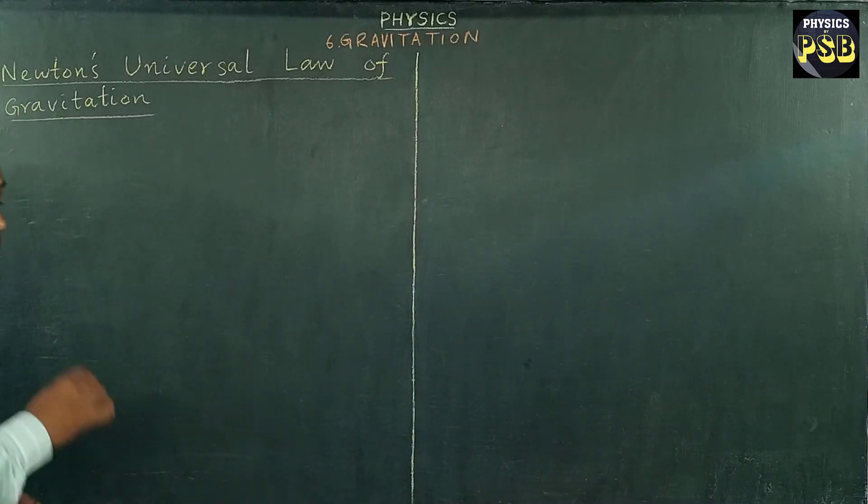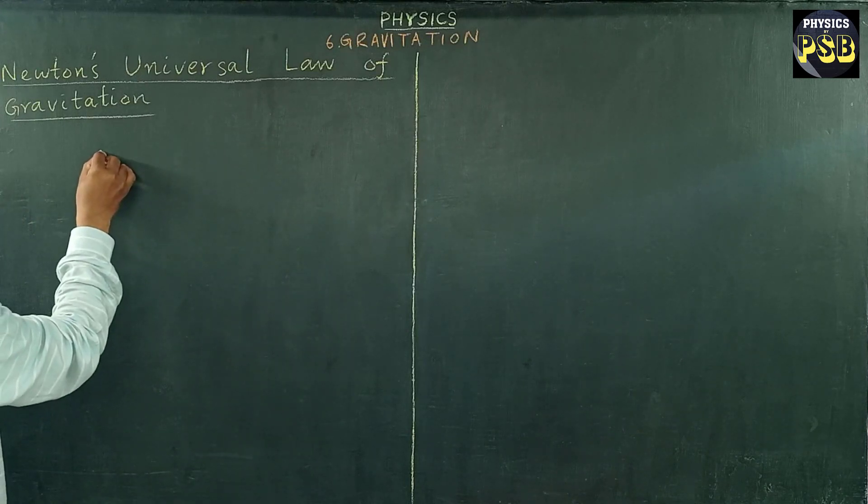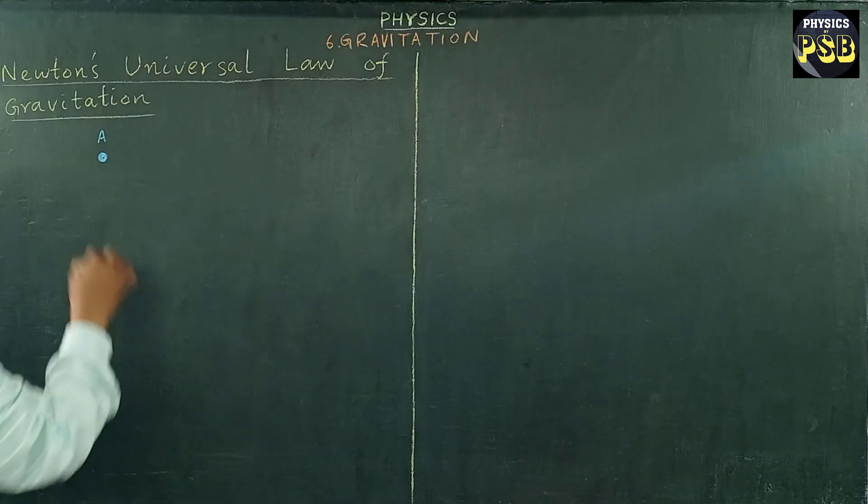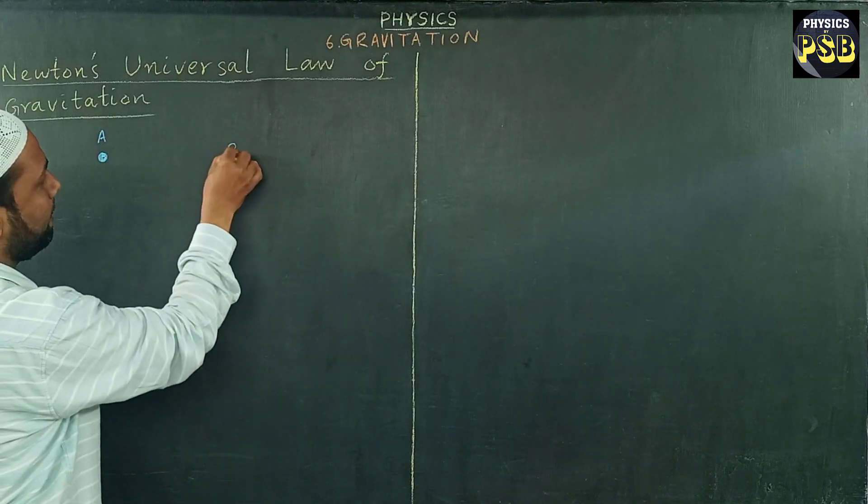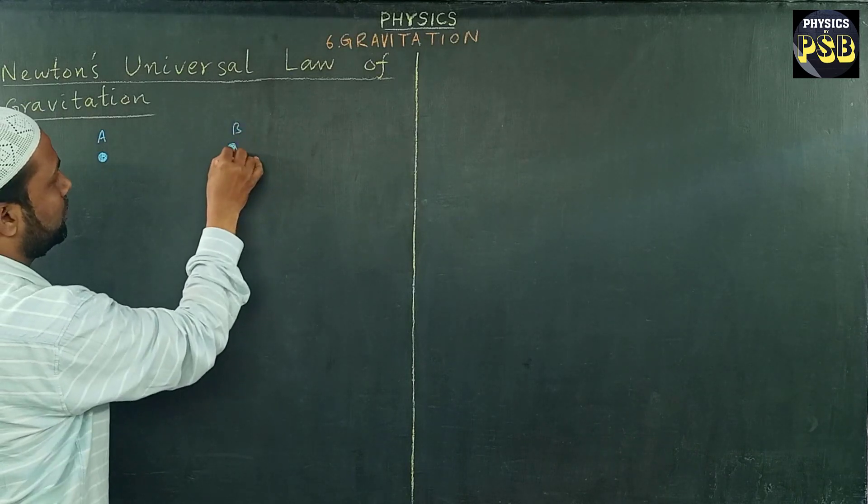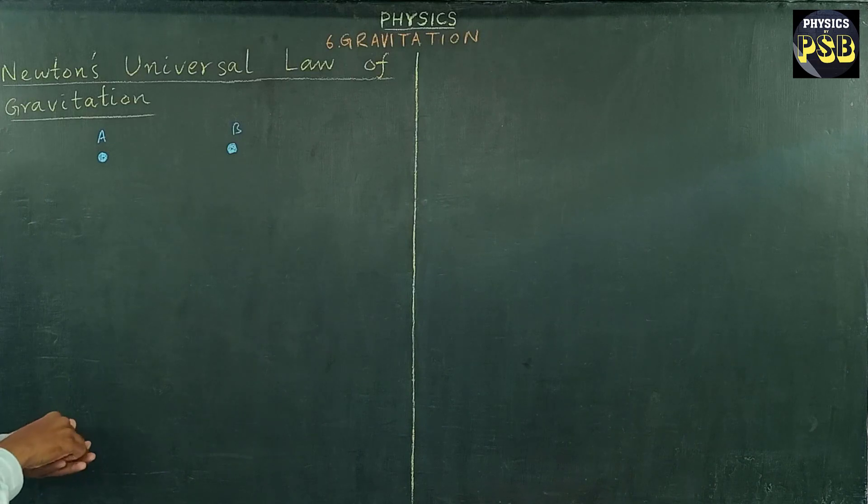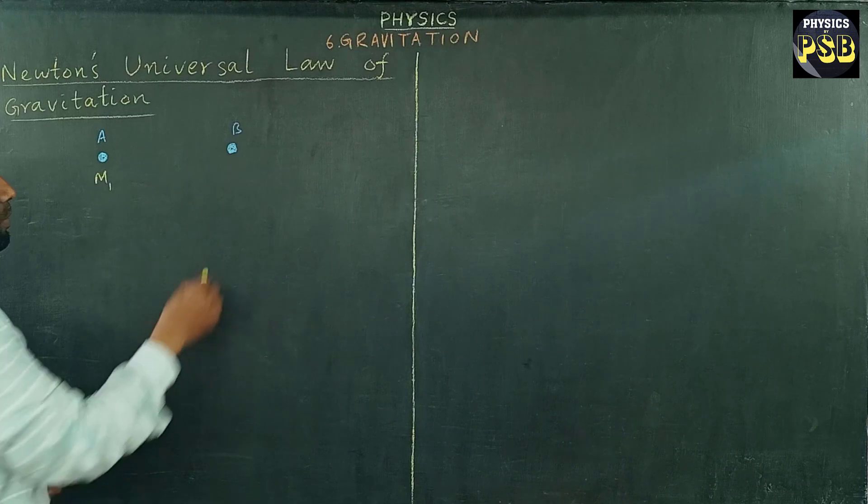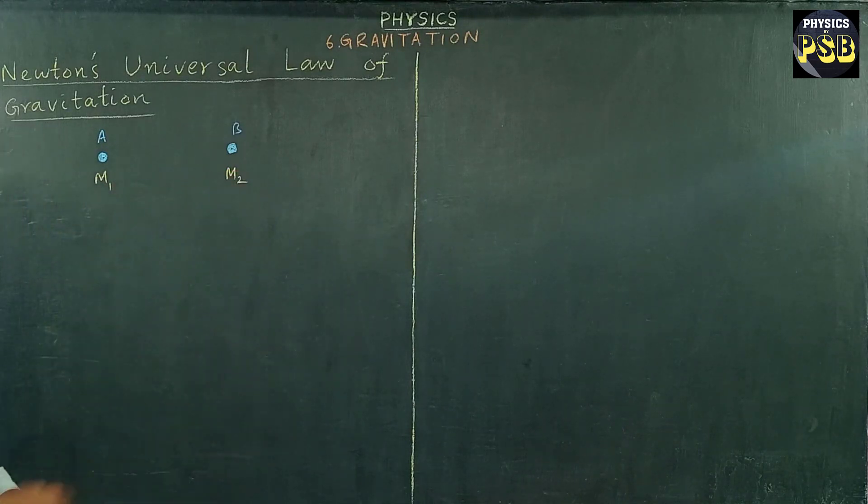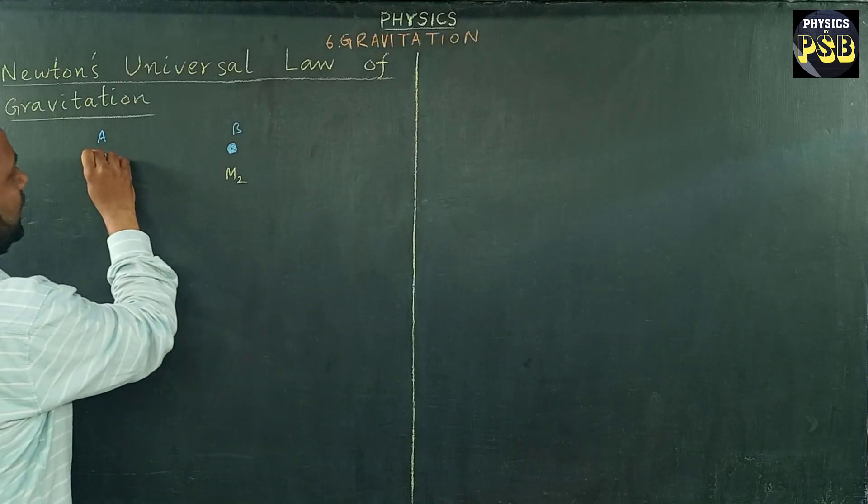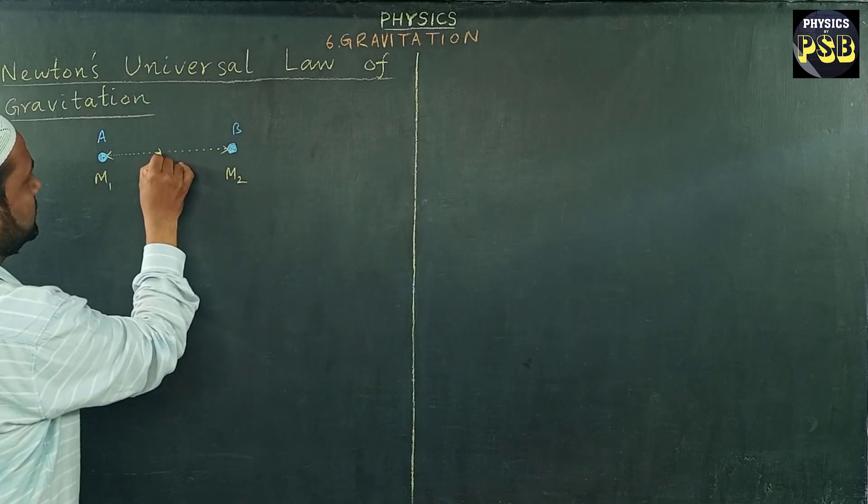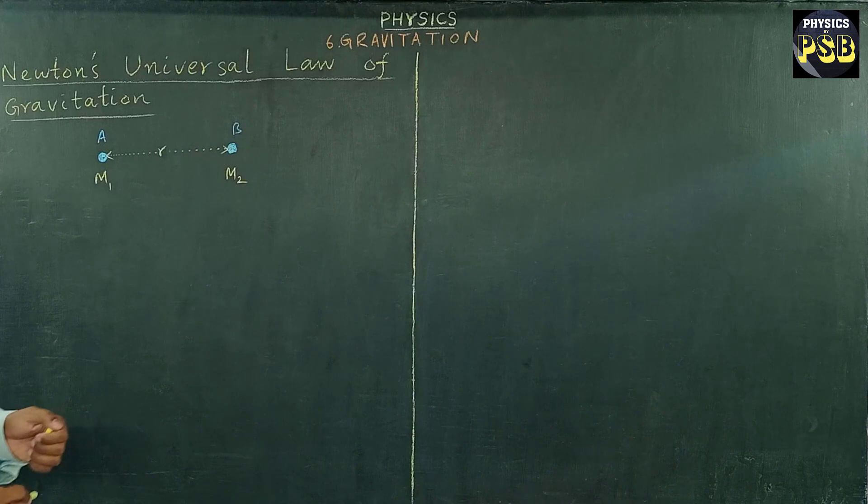To understand the law of gravitation, I consider two objects: object A and object B. The mass of object A is m1 and the mass of object B is m2. These two objects A and B are separated by a distance r.